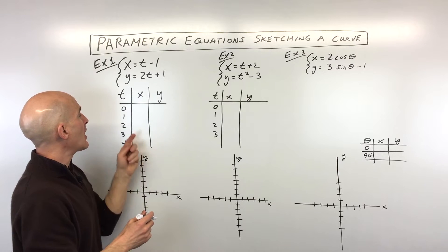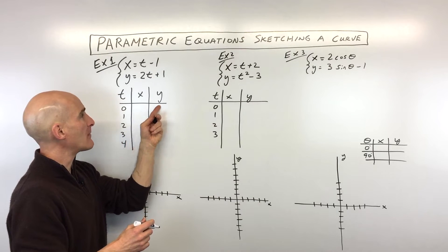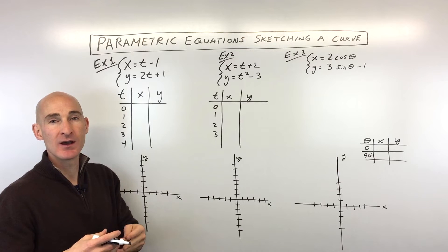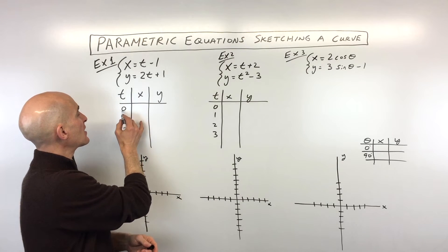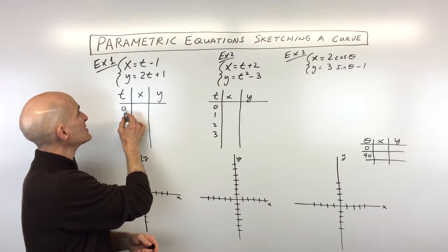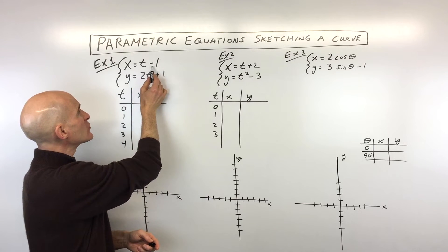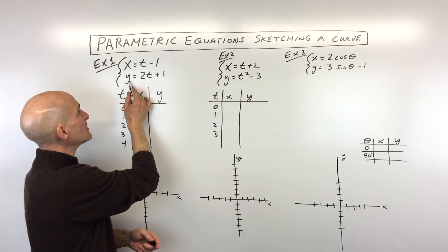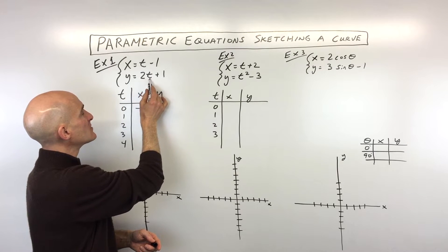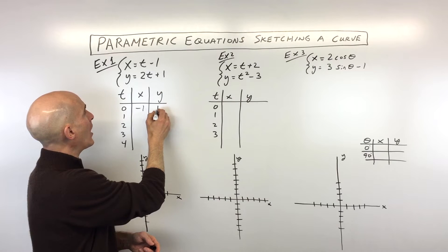Basically, as you can see, as time is increasing, we want to see what happens to, for example, the position of this particle or object. So let's just take an example. Say we put zero in for t, we get zero minus one is negative one. But if we put zero in for t into the second equation, we're getting two times zero, zero plus one is one.